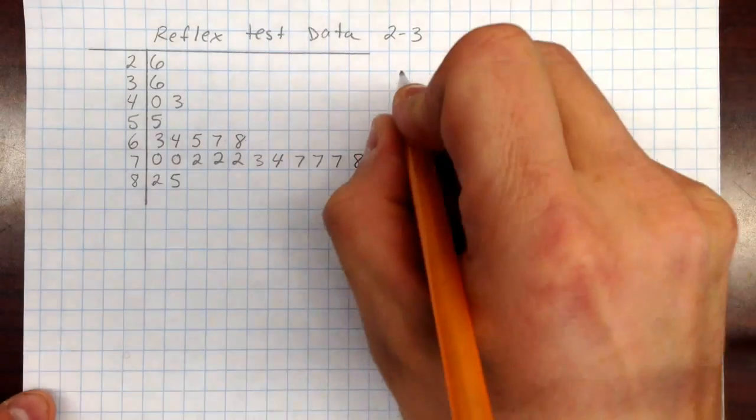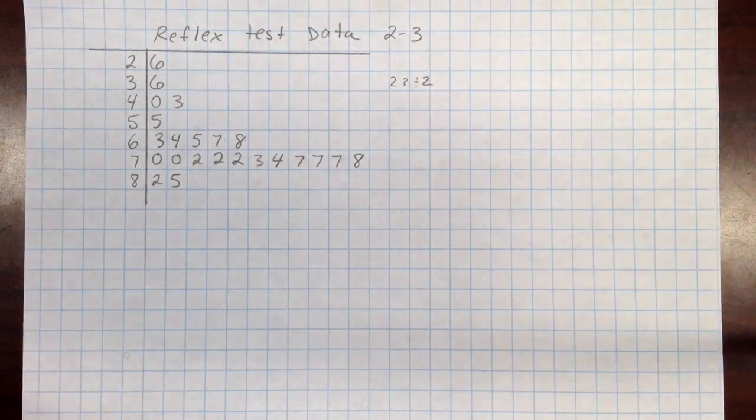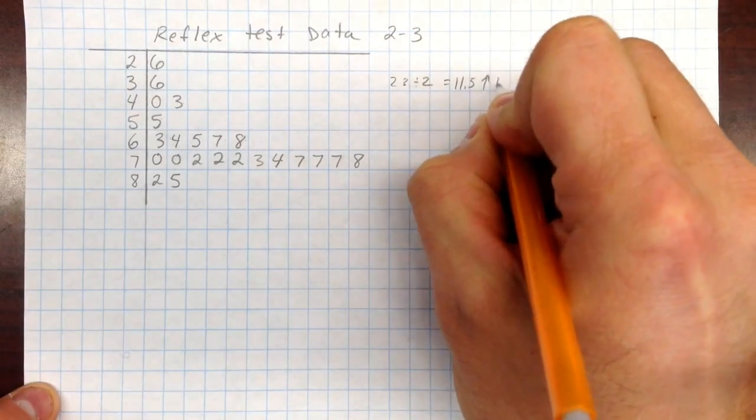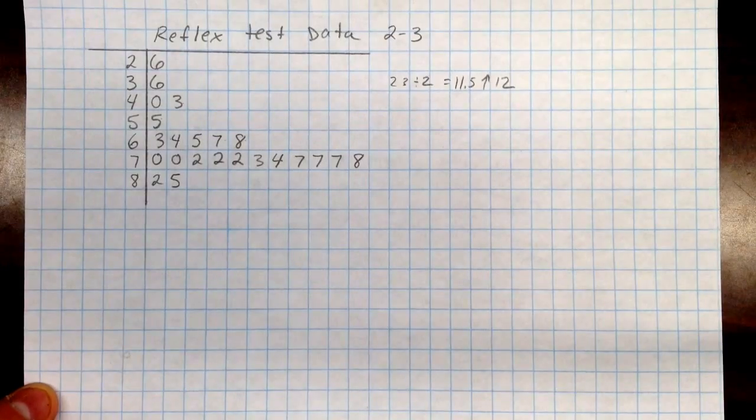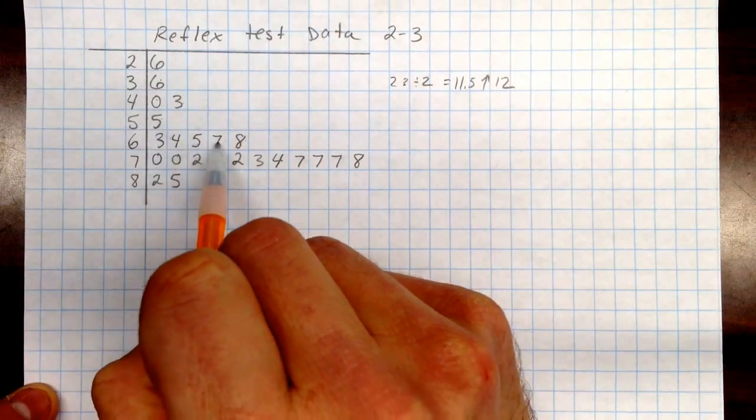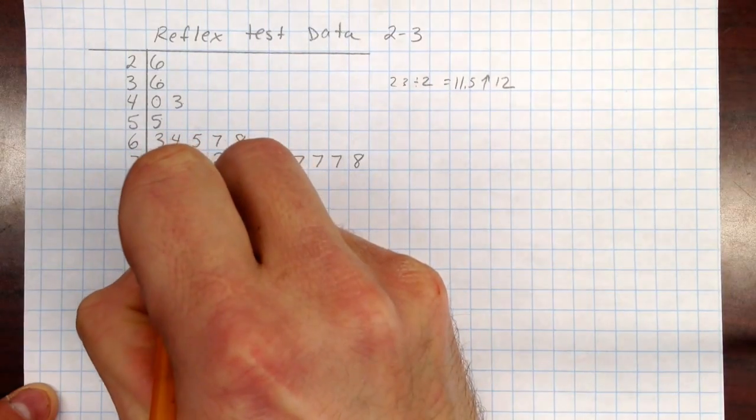So we take 23, divide by 2, we get 11.5, and then round that up to 12. And then that gives us the 12th number in from either the top or the bottom would be the median. So 1, 2, 3, 4, 5, 6, 7, 8, 9, 10, 11, 12. So this is the median right here. There is a middle number since it's an odd number.